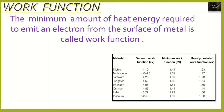Rhenium has a vacuum work function of 4.96 eV, minimum work function of 1.51 eV, and heavily saturated work function of 1.56 eV. Osmium has a work function of 4.83 eV, minimum work function of 1.44 eV, and heavily saturated work function of 1.44 eV. Iridium has a work function of 5.27 eV and a minimum work function of 1.79 eV, heavily saturated work function of 1.86 eV. Platinum has a work function ranging from 5.6 to 5.8 eV, minimum work function of 1.59 eV, and heavily saturated work function of 1.66 eV.